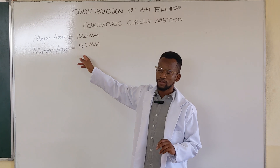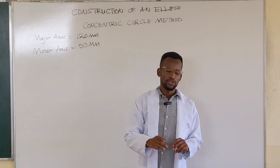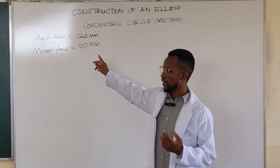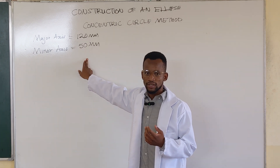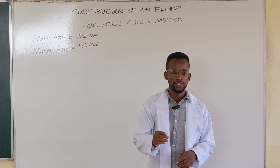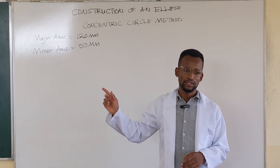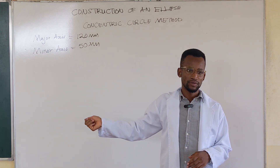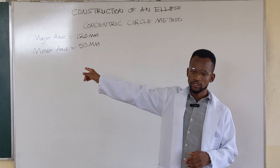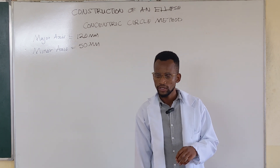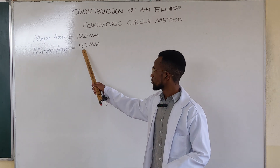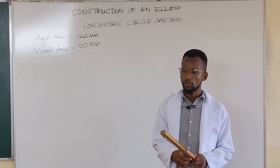Whenever you've been given the major and minor axis and you're using concentric circles, you draw two circles from the same center. One will have a diameter of the minor axis — 50 in our case — and the other will have the diameter of the major axis, which is 120. When given the diameter, you open the compass to the radius — half the diameter. So if the diameter is 120, we open to a radius of 60 millimeters and draw that circle. For the other one, we draw a circle of radius 25.